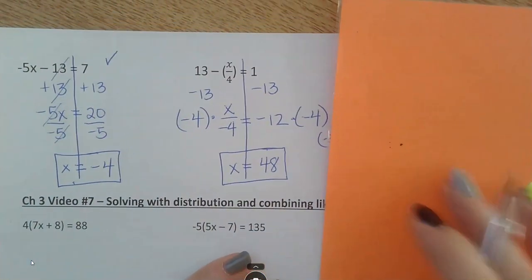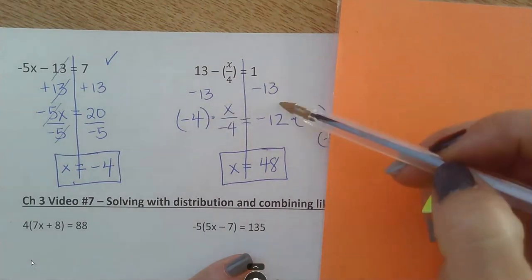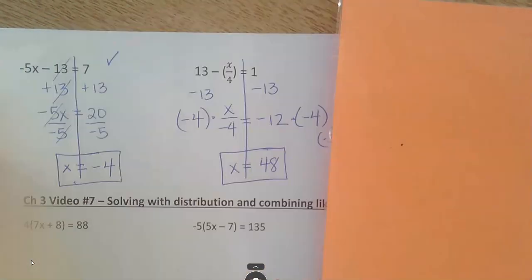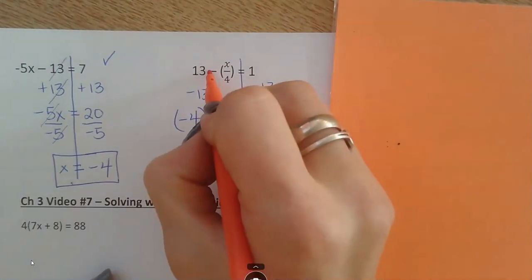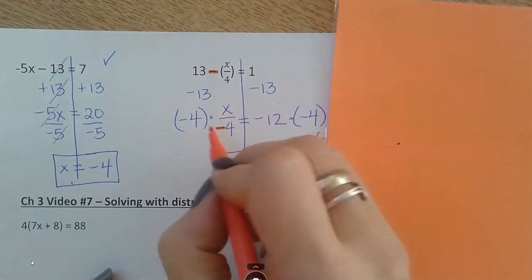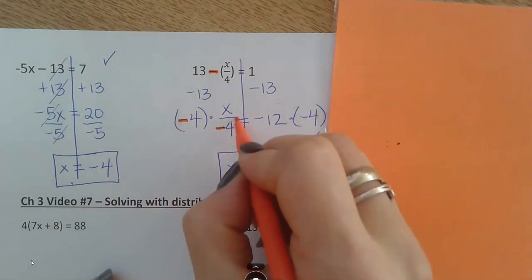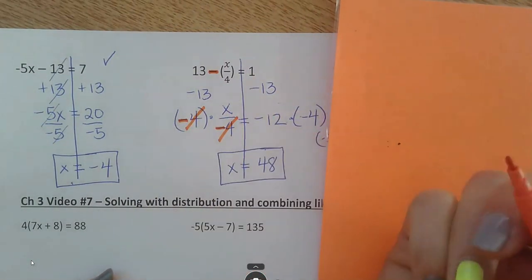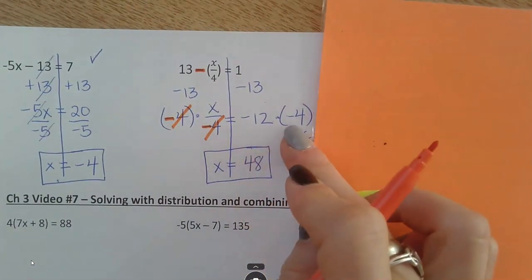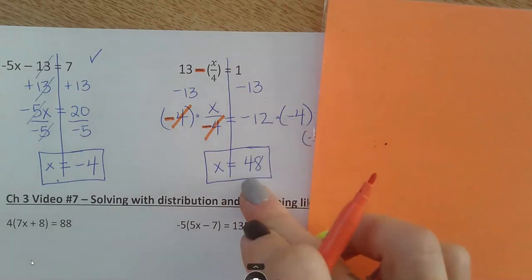Okay. This one. Minus 13 on both sides. That brings me to negative 12 here. And again, I chose to kind of see this negative going with the 4. Because now, if I multiply by negative 4, this negative 4 and this negative 4 cancel out. Same thing on the other side. A negative times a negative is positive.